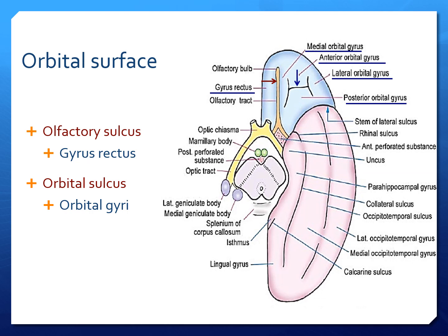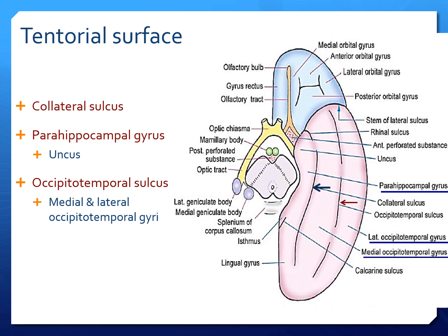On the orbital surface there is a red colored arrow pointing at the olfactory tract. It lies on a sulcus called the olfactory sulcus. The area medial to it is called gyrus rectus. Just lateral to the olfactory sulcus there is an H-shaped sulcus marked with the blue arrow, called the orbital sulcus. It divides that part of the orbital surface into four parts: anterior, posterior, medial, and lateral orbital gyrus. There is one more sulcus marked with red, the occipitotemporal sulcus, which divides the tentorial surface into medial and lateral occipitotemporal gyrus. So we have the para-hippocampal gyrus, medial and lateral occipitotemporal gyrus.